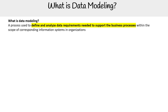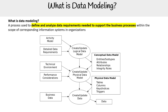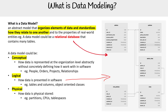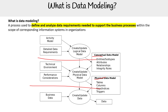So what is data modeling? It's a process used to define and analyze data requirements needed to support the business processes within the scope of the corresponding information systems and organization. You can see that data modeling is broken up into three sections, which maps up really well — conceptual, logical, physical. So keep in mind that if you have data modeling, you can move from a conceptual to a logical to a physical one.